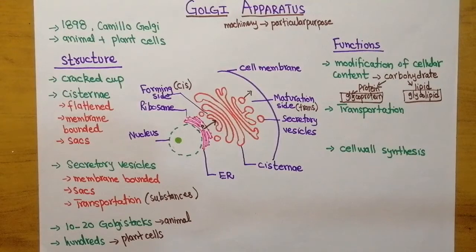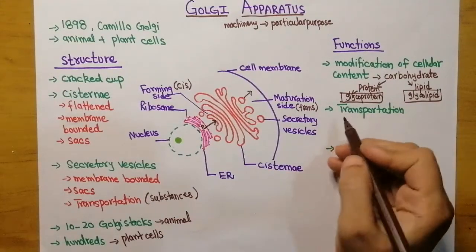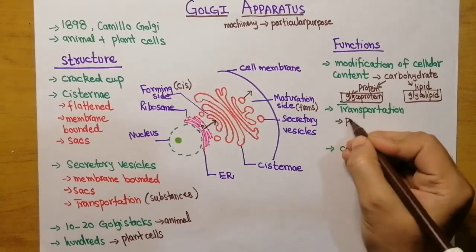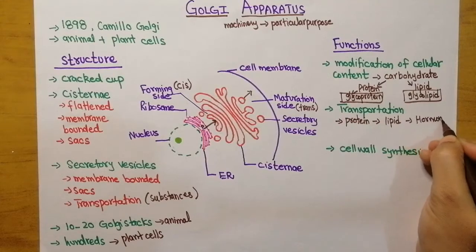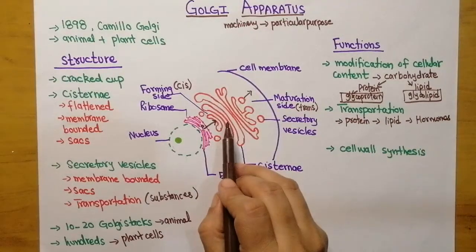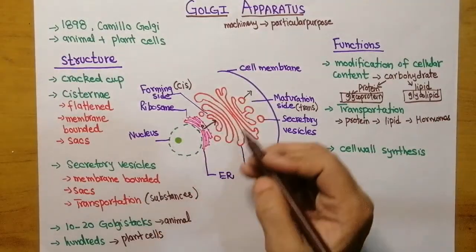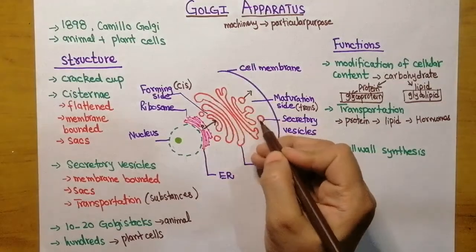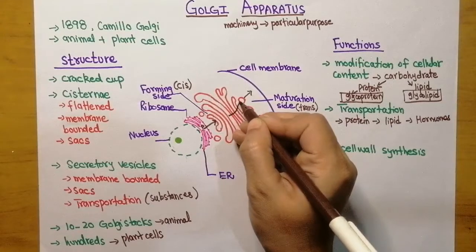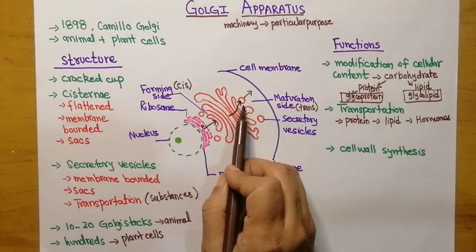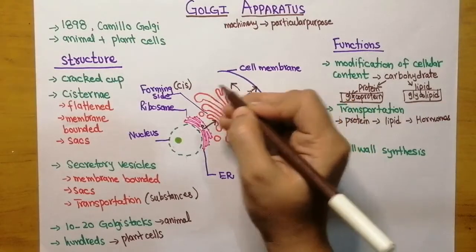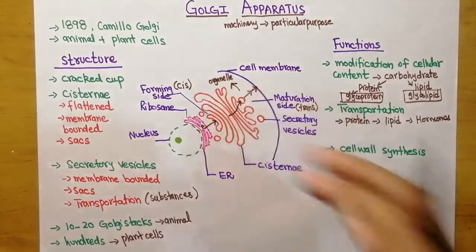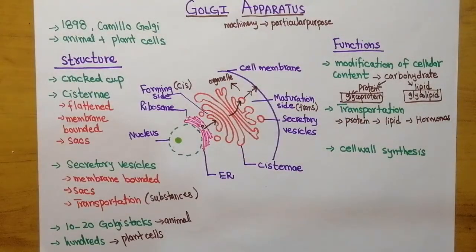The second important function of the Golgi apparatus is transportation. These modified products — along with other cellular products such as proteins, lipids, or hormones — are transported from one cell to another or to other destinations within the cell via secretory vesicles. The secretory vesicles take those products toward the cell membrane, to other organelles, or wherever that product is needed.